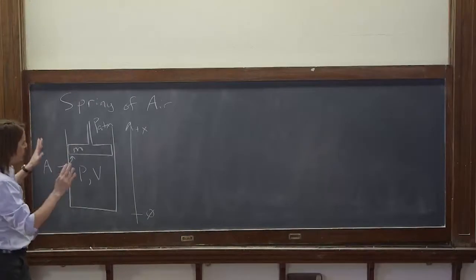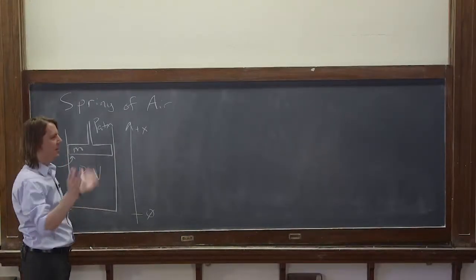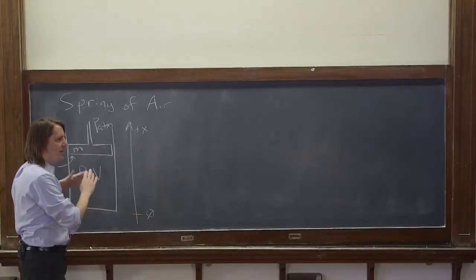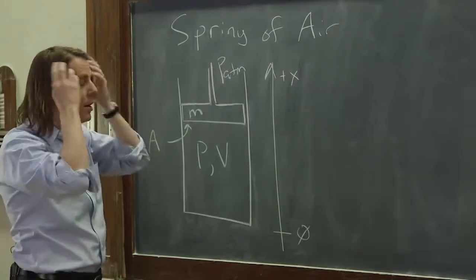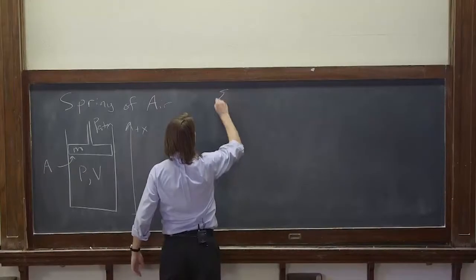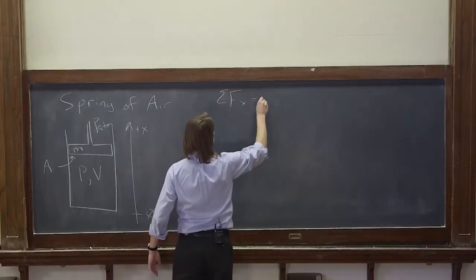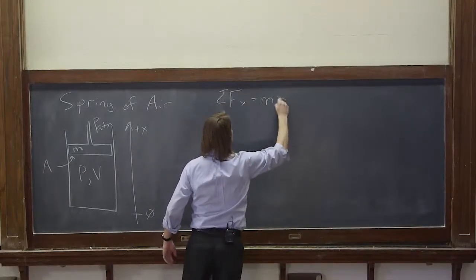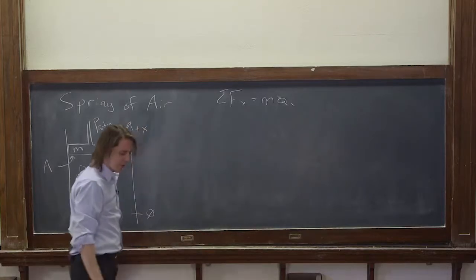We're going to do it like we said at the beginning. We have a physical situation. Next step is to apply the laws of physics, Newton's second law in this case. Sum of the forces along the x-axis equals m times the acceleration in the x-axis.